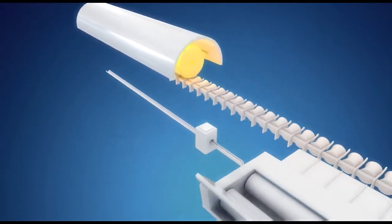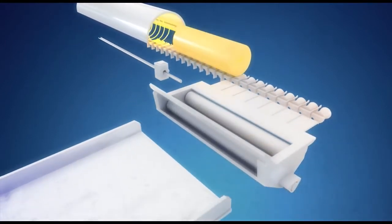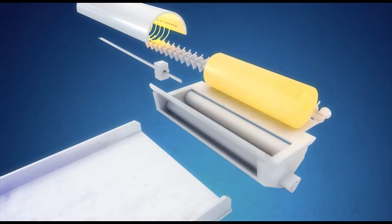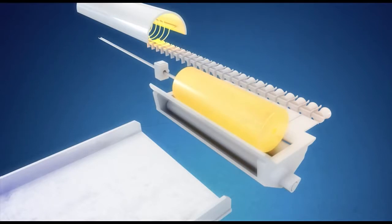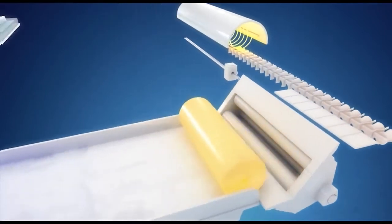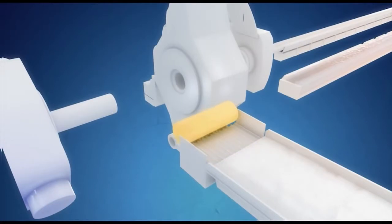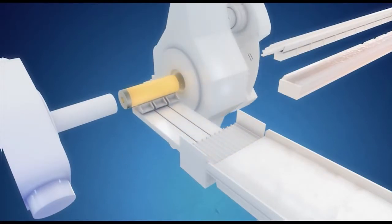The extrusion billet is heated to about 1200 degrees centigrade and then lubricated internally, as well as externally with a glass powder.